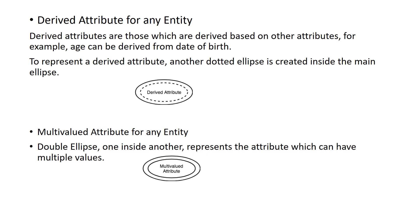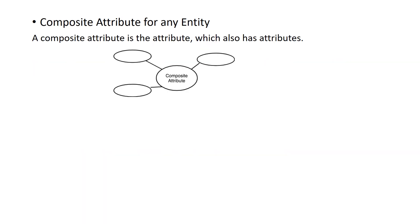So to summarize the main symbols: entity is a rectangle box, attributes are ellipses, and relationship is a diamond. Next is the composite attribute. If you want to divide one attribute into sub-parts, that is a composite attribute. For example, name can be divided into first name, middle name, and last name. Similarly, address can be divided into street number, city, district, state, etc.